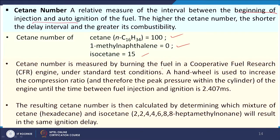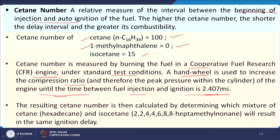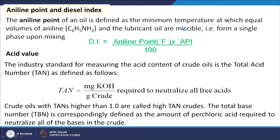Cetane number is measured by burning the fuel in a cooperative fuel research (CFR) engine under standard test conditions. A hand wheel is used to increase the compression ratio until the time between fuel injection and ignition is 2.407 milliseconds. Then the cetane and 1-methyl naphthalene mixture is used under the same compression ratio, and the composition with the same delay time gives the cetane number. Related properties are aniline point and diesel index.